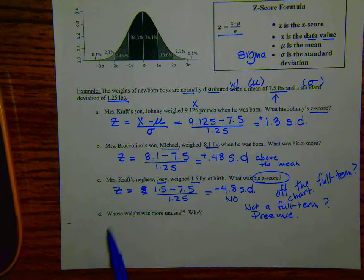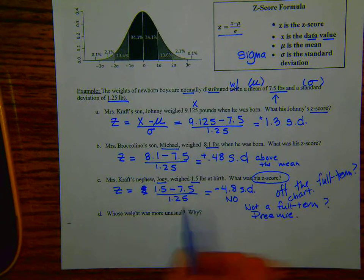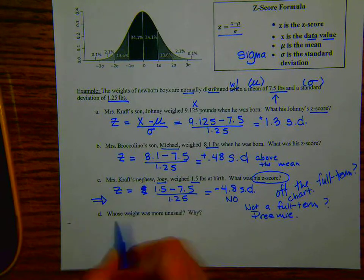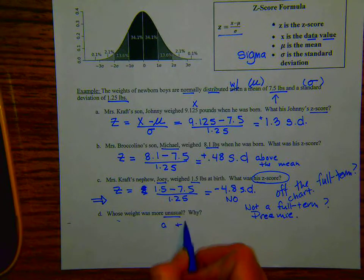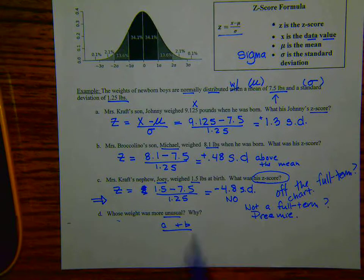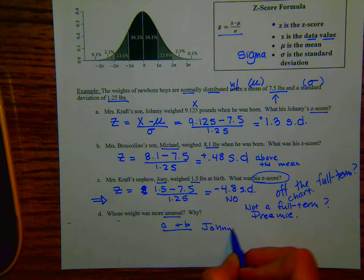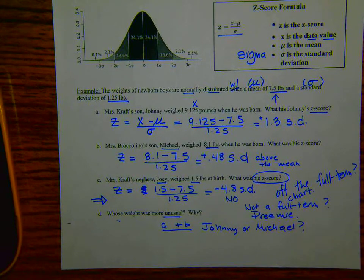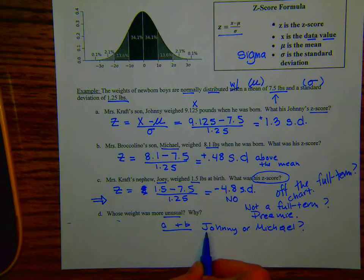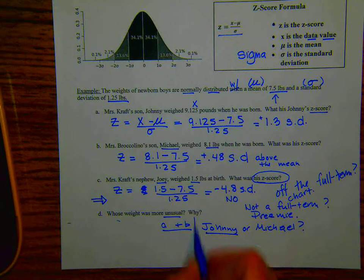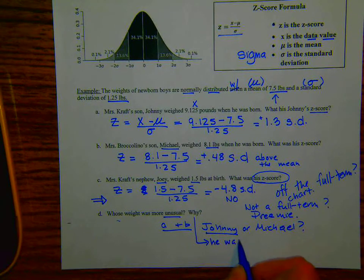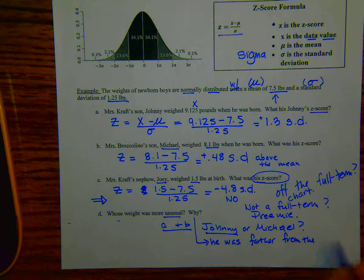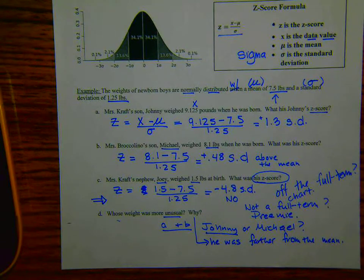Okay. So that was very interesting. We had, we want to be aware of things like that and not just dismiss them. Now, let's going back, whose weight was more unusual between A and B? Between A and B, whose weight was more unusual? Johnny or Michael? Well, we want to say that Johnny was more unusual. Why? Because he was farther from the mean. And that's our answer.